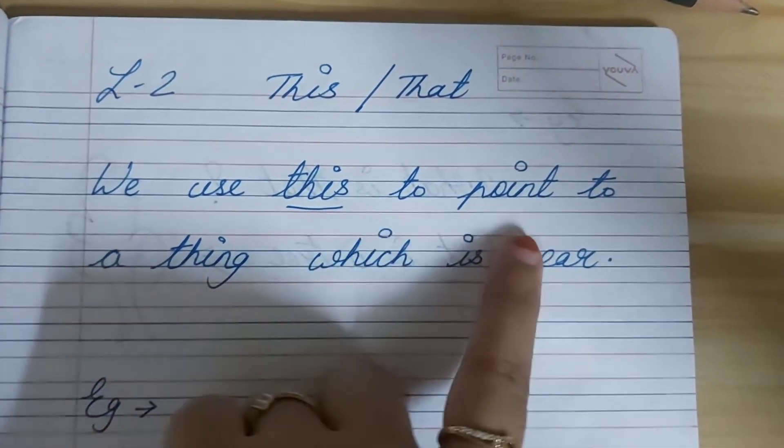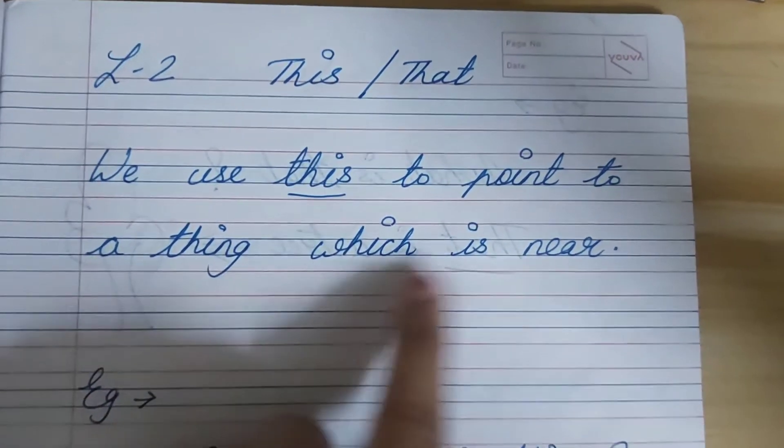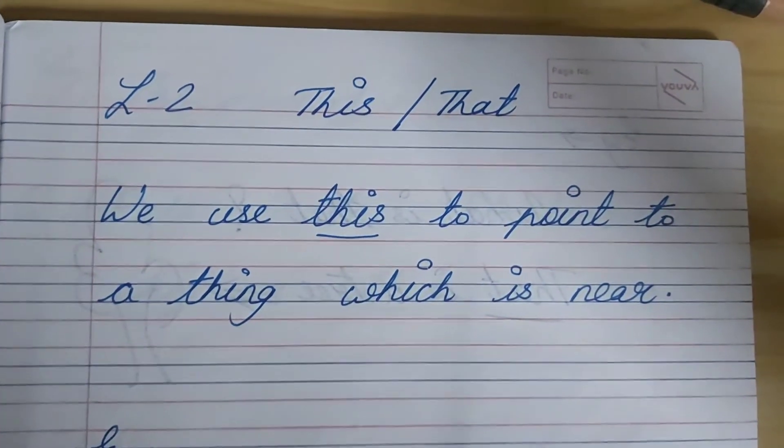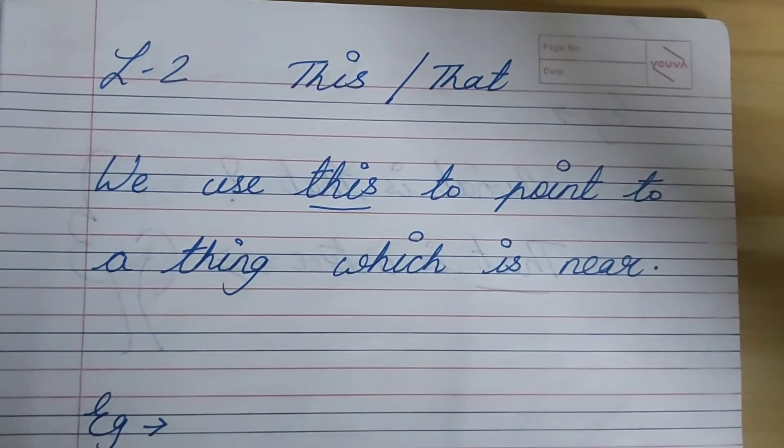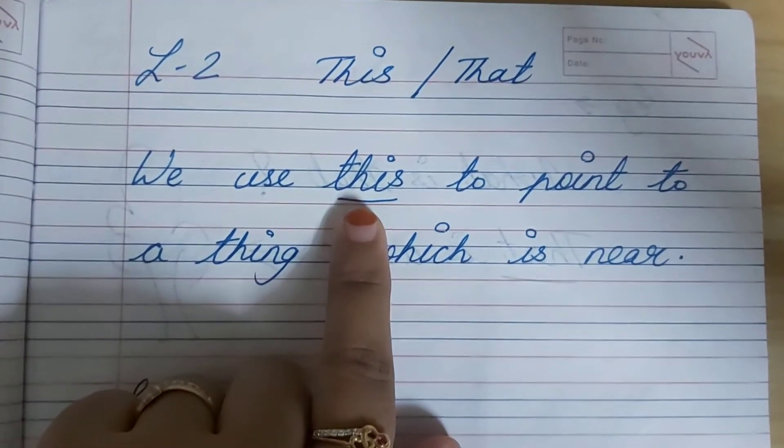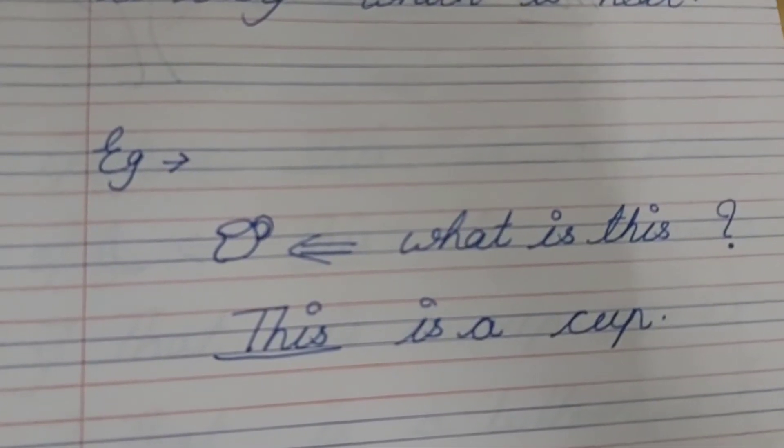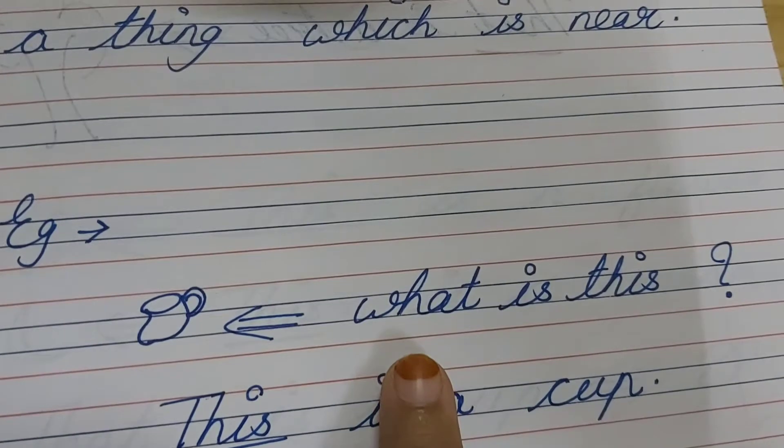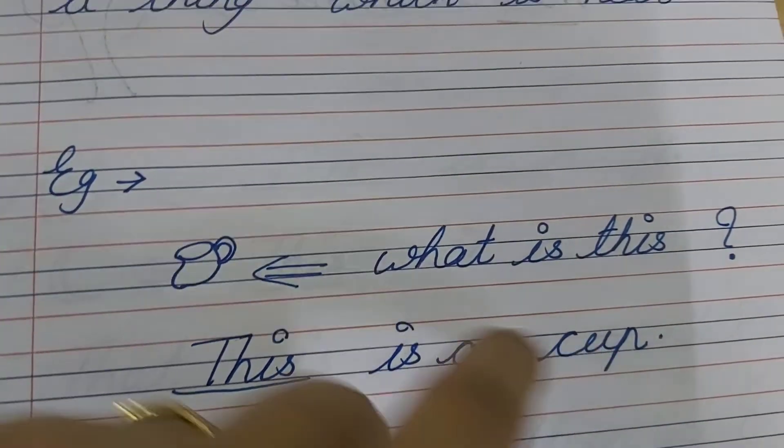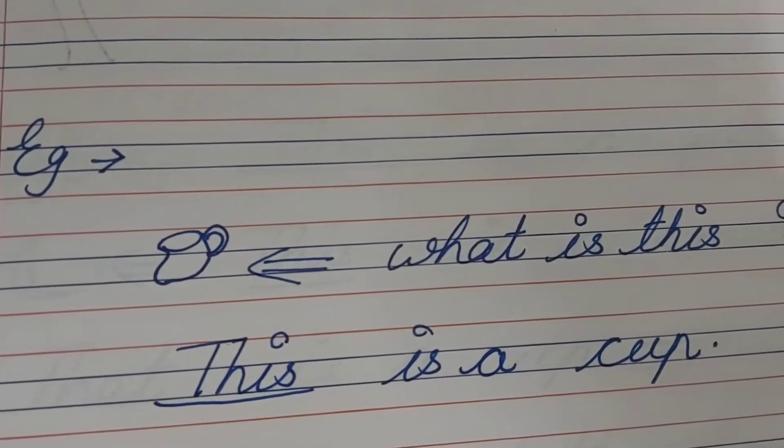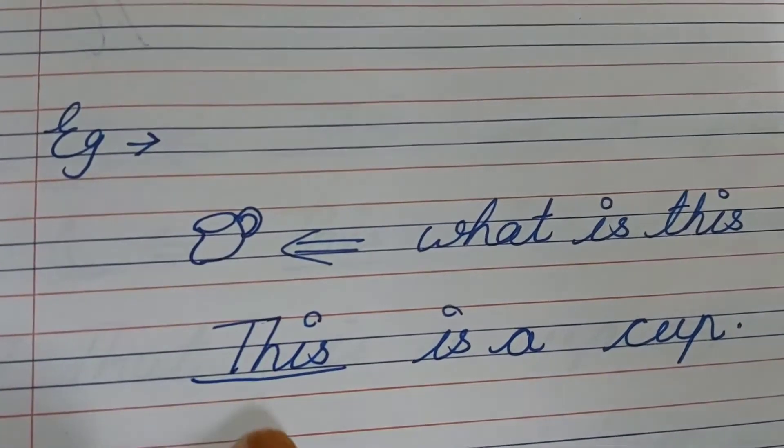We use this to point to a thing which is near. Dear children, what is this? This is a cup. So dear children, which thing is close to us, then we will use this.